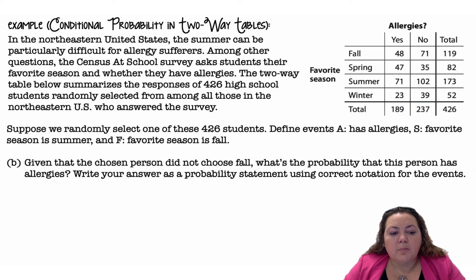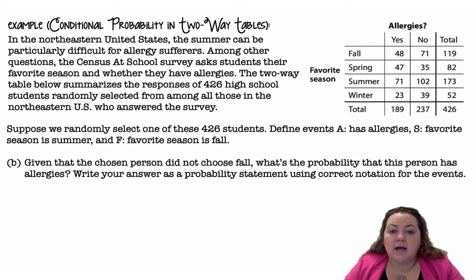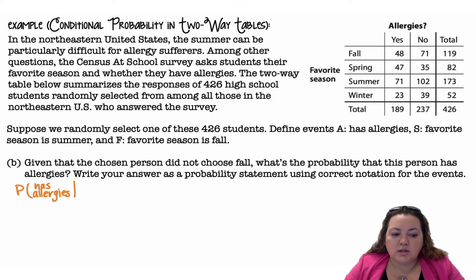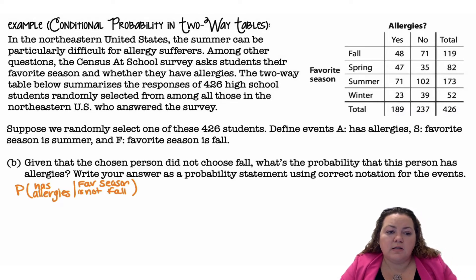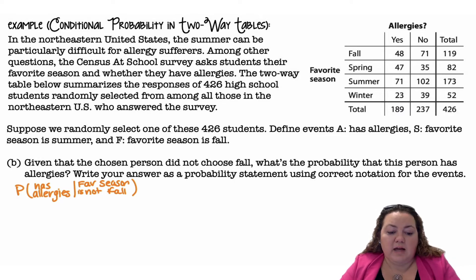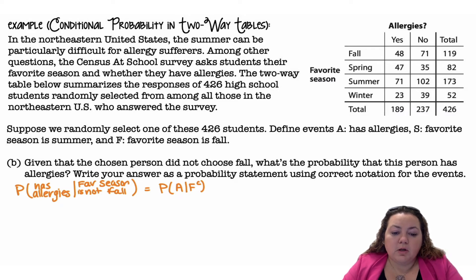Part B: given that the chosen person did not choose fall, what is the probability that this person has allergies? Write your answer as a probability statement using correct notation. This is has allergies given their favorite season is not fall. Be careful because this is written in reverse order — the given piece always comes after that line. In symbolic form, this is A given F-complement, because it's not fall.